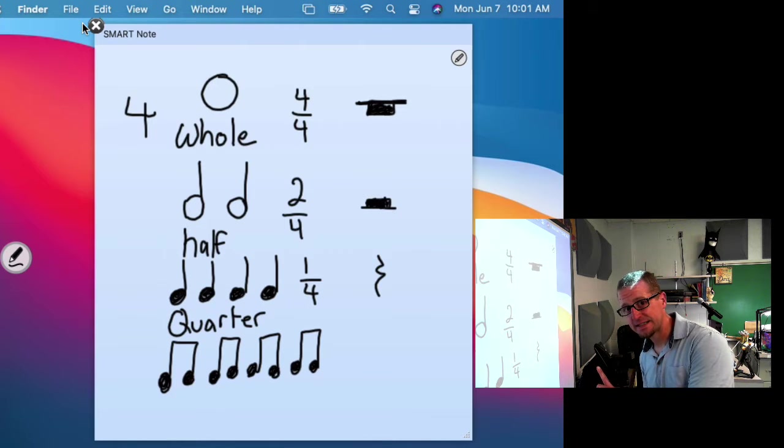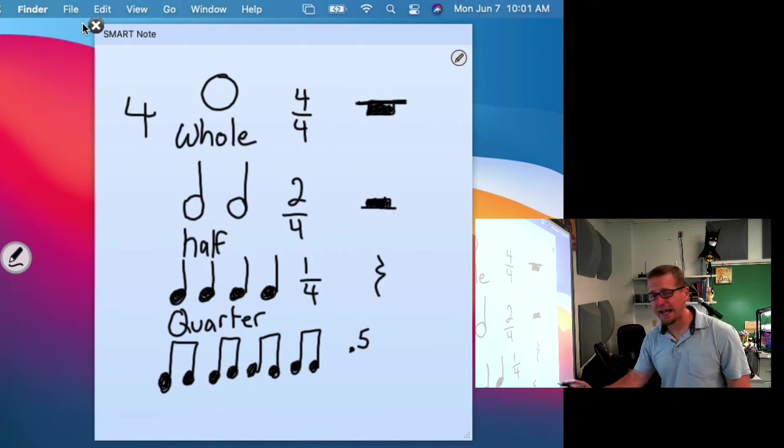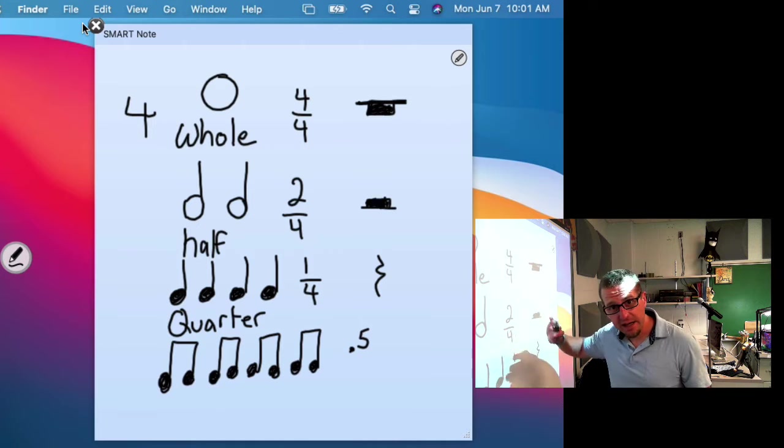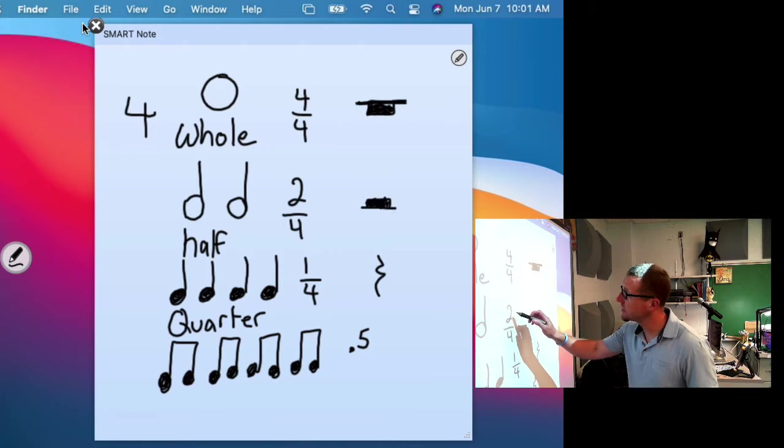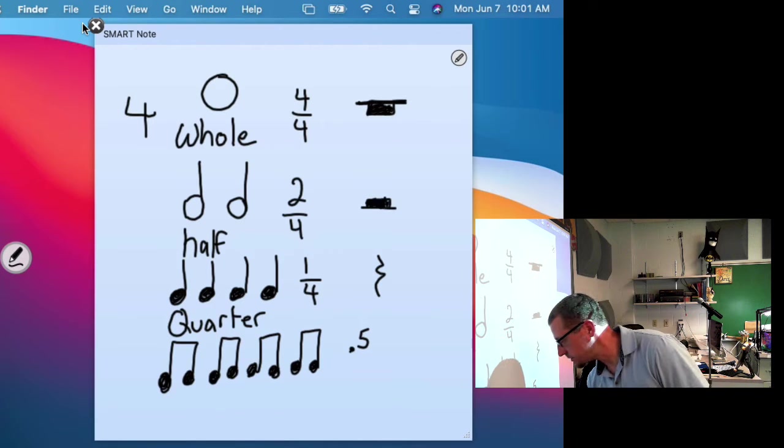So 1 eighth note is equal to a half a beat. So I'm going to write it like this, 0.5 beats. Okay, I'm not going to write one half because that's half note, right? Half note takes up half of a measure. This takes up one half of a beat, so this is 0.5 beats. This is one beat, two beats, four beats.